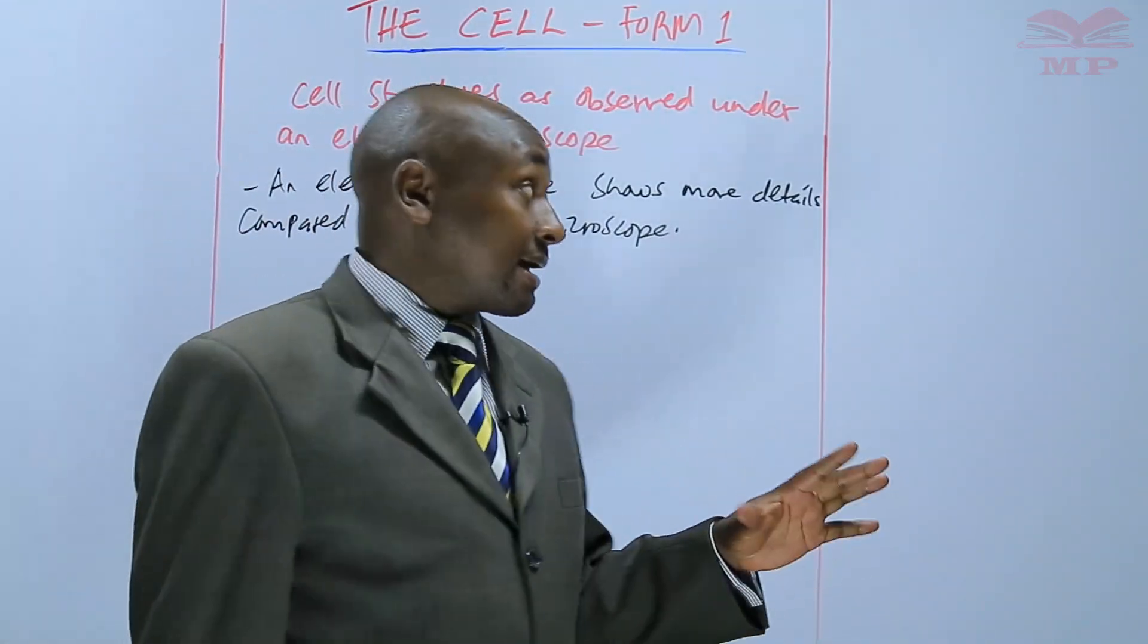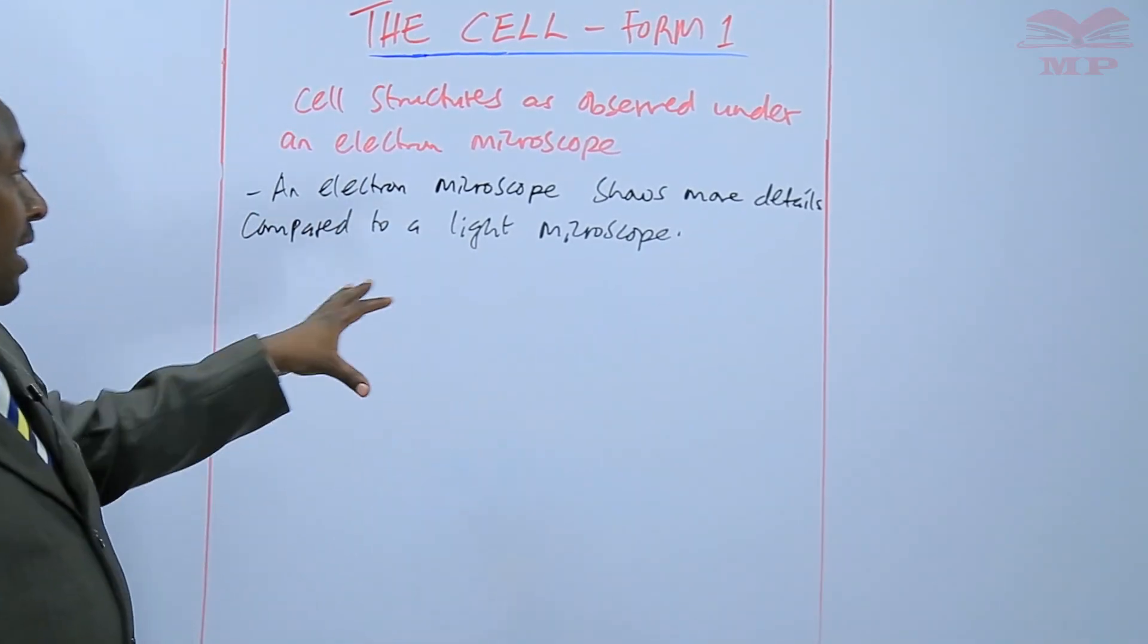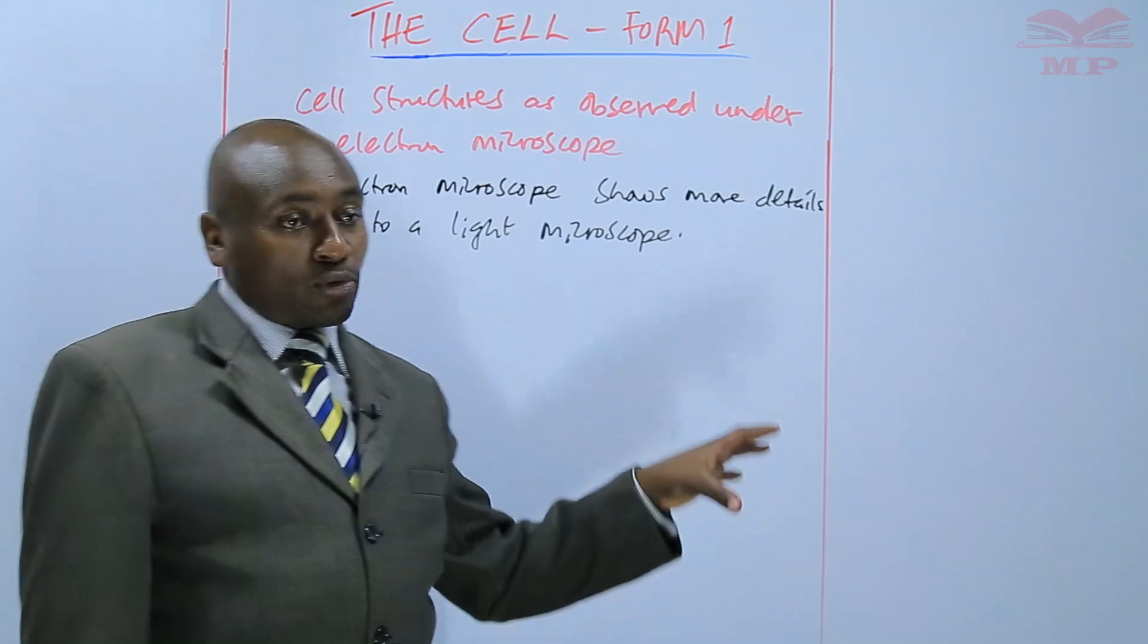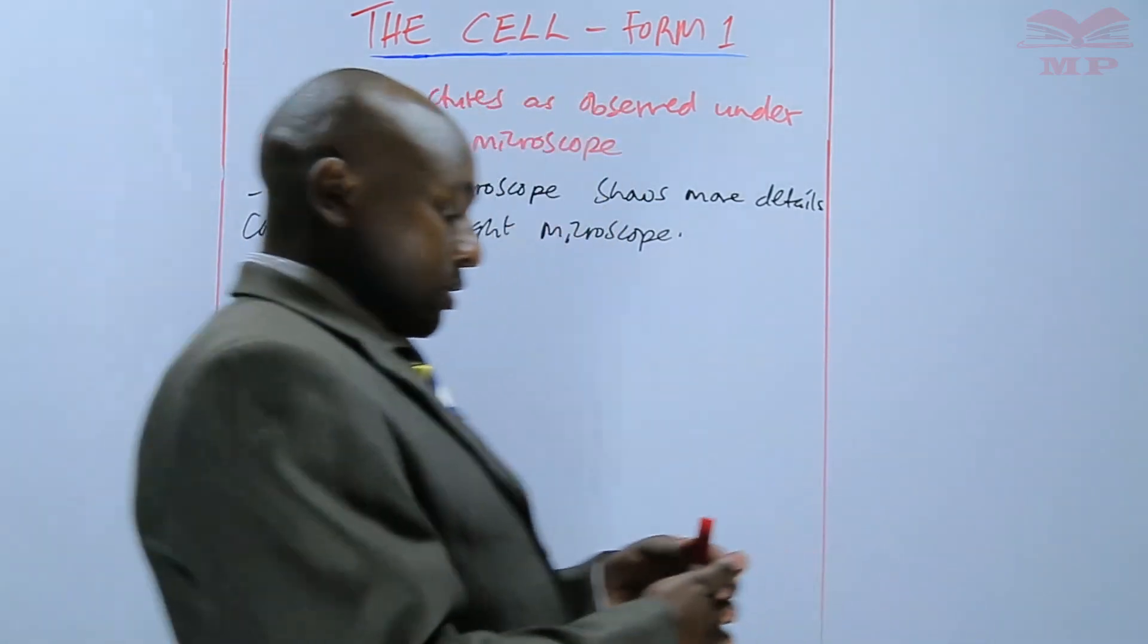So we'll start with a diagram on a plant cell as viewed under an electron microscope, then an animal cell as viewed under electron microscope.